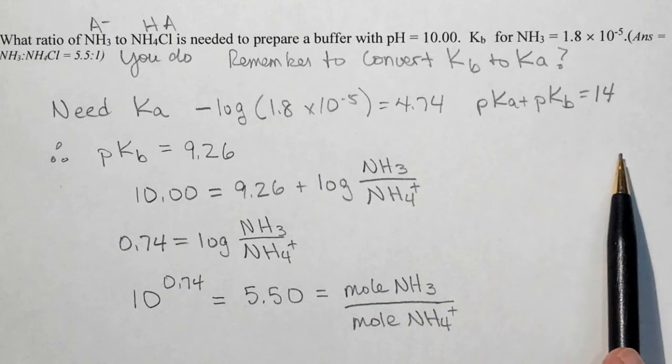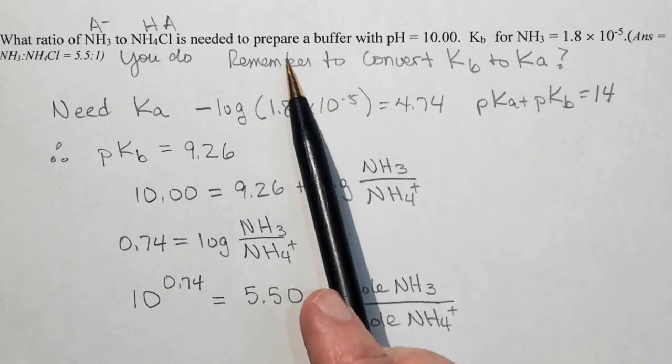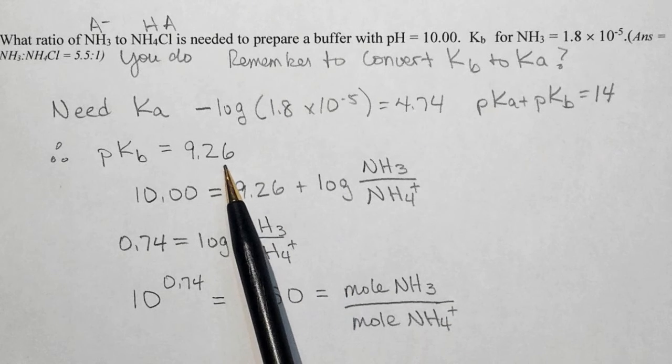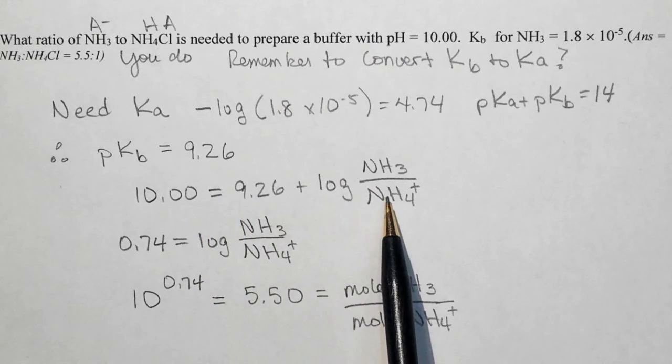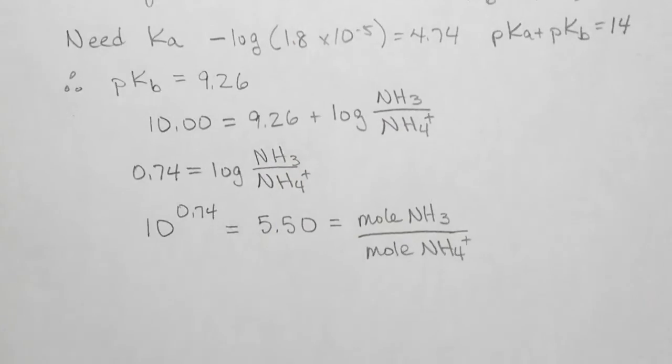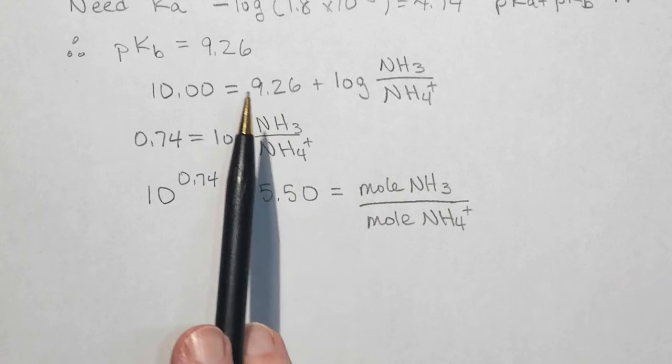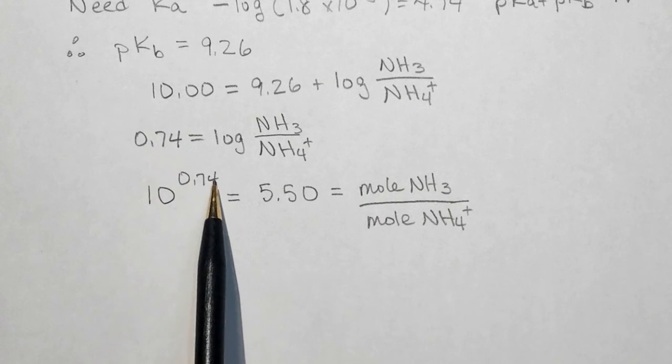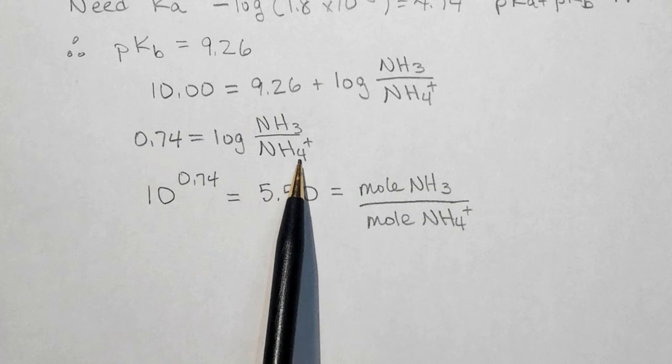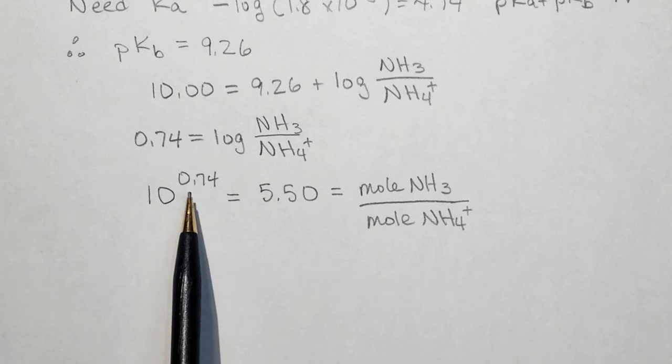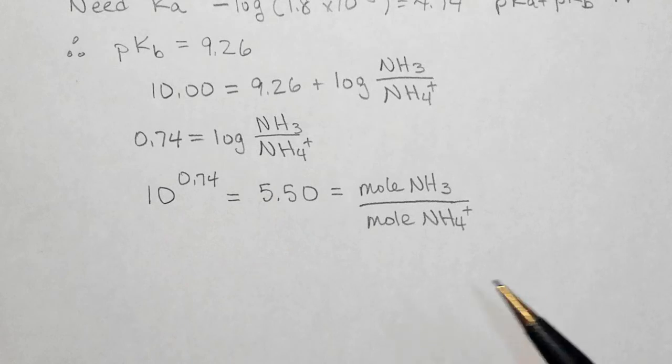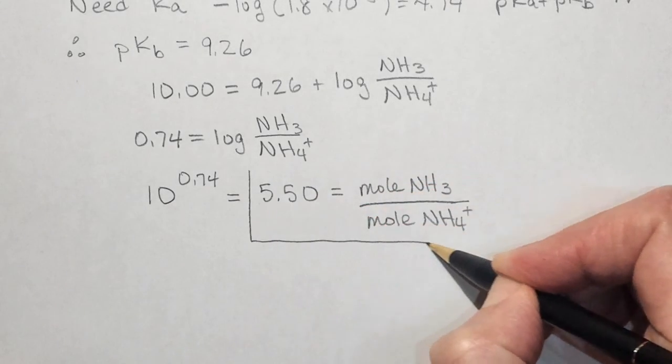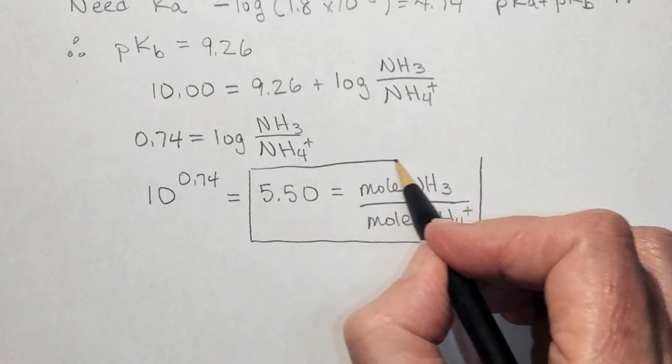So 10 equals 9.26 plus the log of NH3 over NH4. Then you're going to have 0.74 equals the log of ammonia over ammonium. And finally 10 raised to 0.74 equals 5.50, which is the ratio of your moles of ammonia to moles of ammonium.